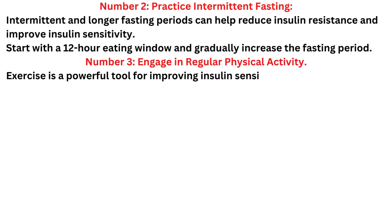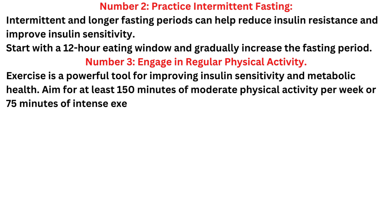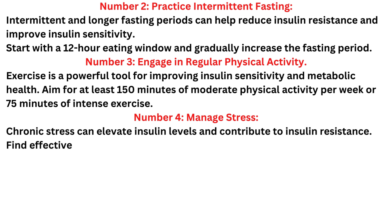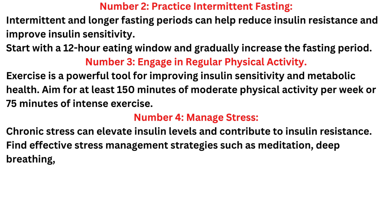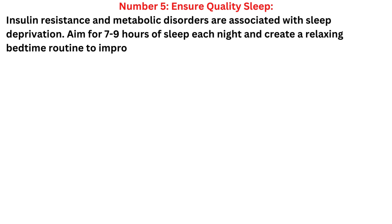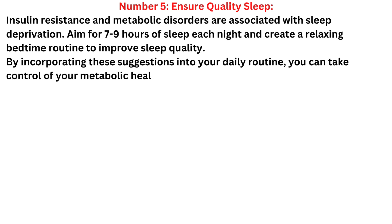Number 3: engage in regular physical activity. Exercise is a powerful tool for improving insulin sensitivity and metabolic health. Aim for at least 150 minutes of moderate physical activity per week or 75 minutes of intense exercise. Number 4: manage stress. Chronic stress can elevate insulin levels and contribute to insulin resistance. Find effective stress management strategies such as meditation, deep breathing, or regular yoga practice. Number 5: ensure quality sleep. Insulin resistance and metabolic disorders are associated with sleep deprivation. Aim for 7 to 9 hours of sleep each night and create a relaxing bedtime routine to improve sleep quality.